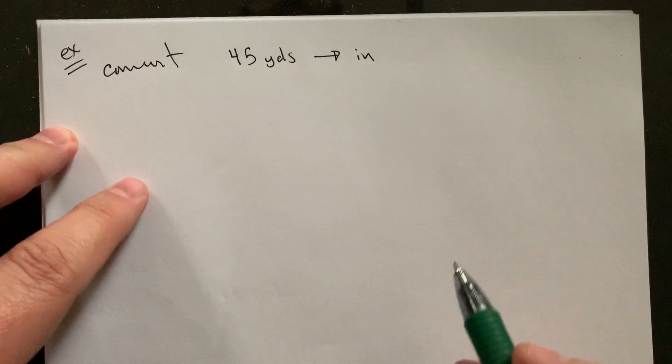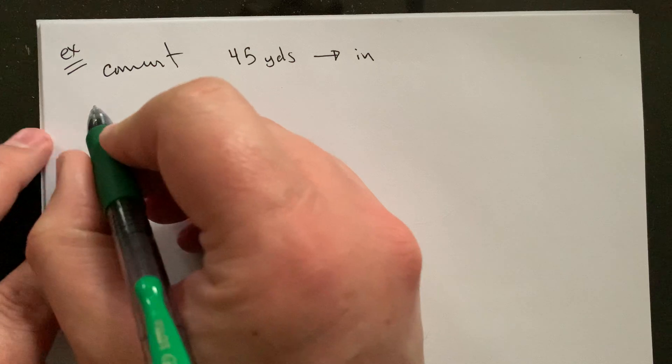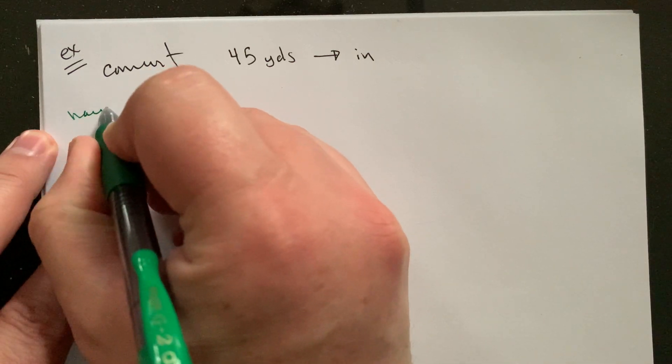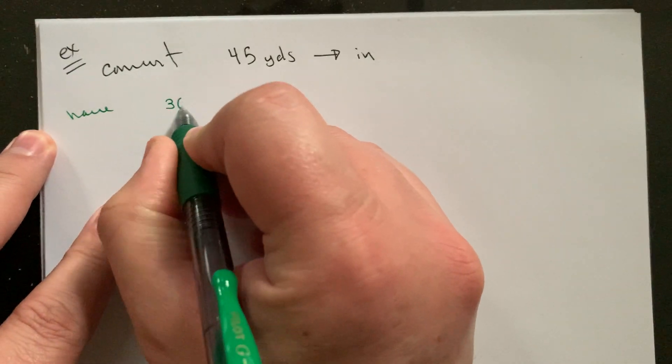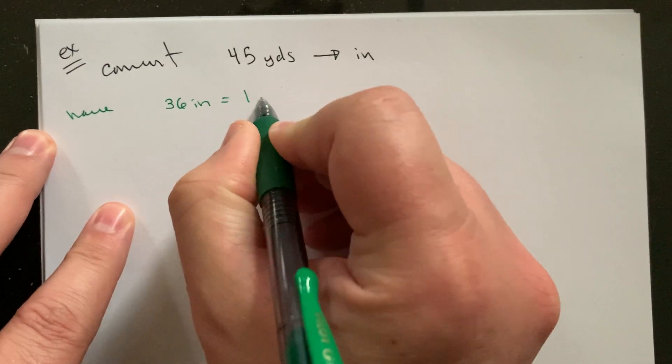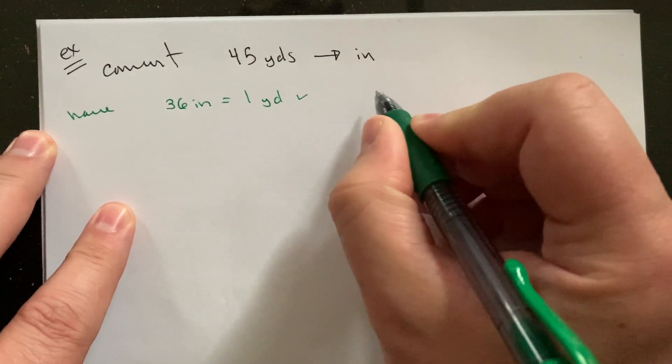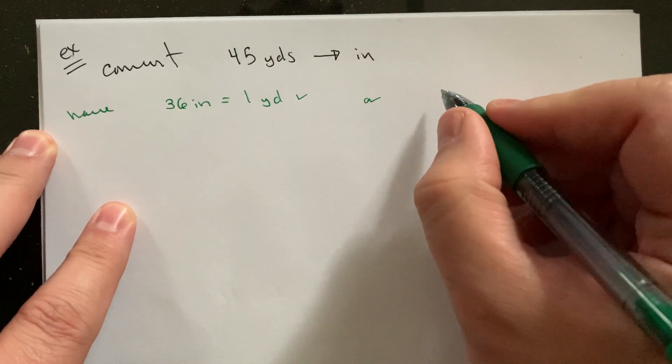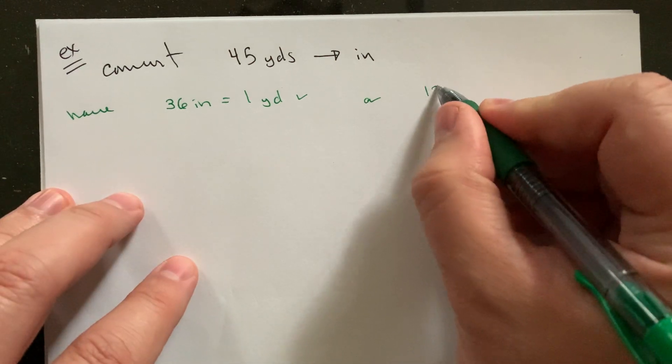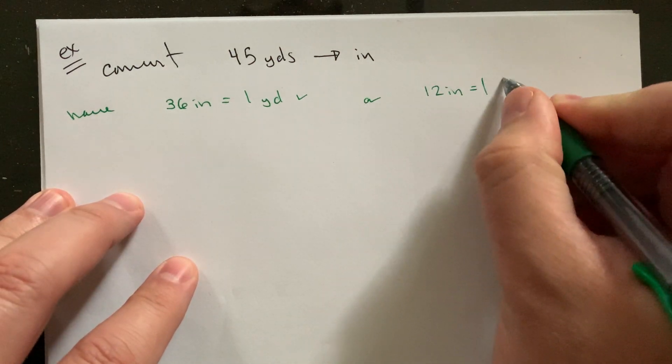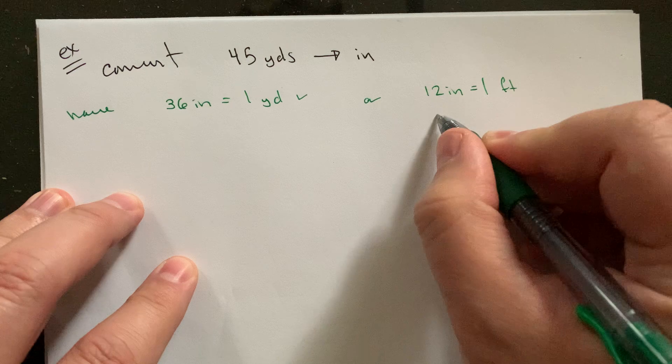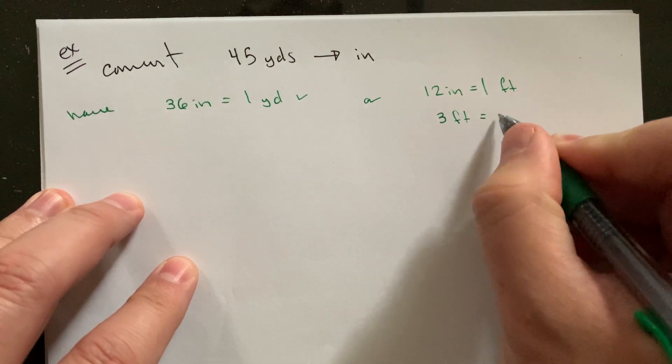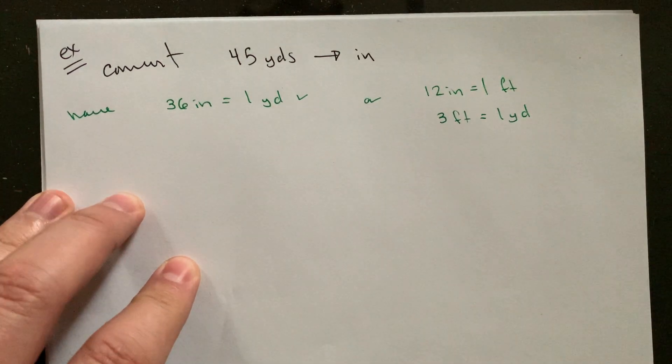This is one we can set up a couple different ways. As far as our rates here, we know that there are 36 inches per every one yard, or we can do a combination setup where we know there's 12 inches for every foot, and there are three feet for every yard.